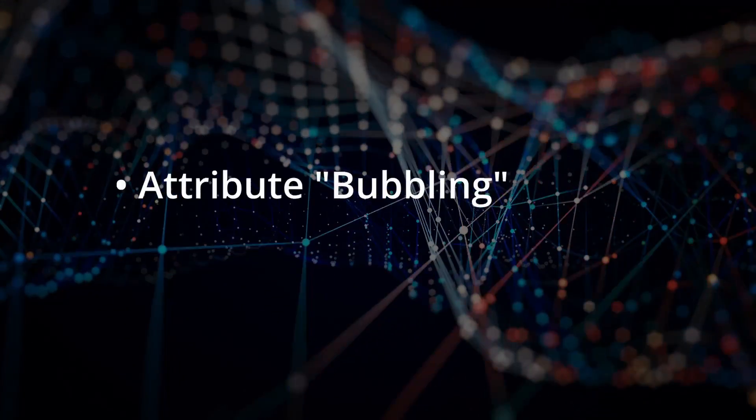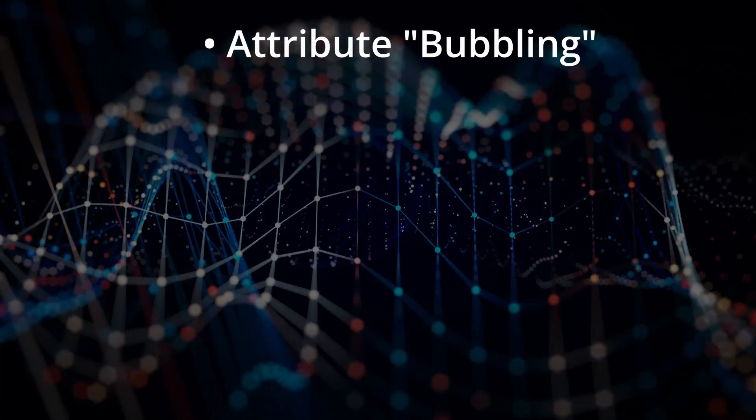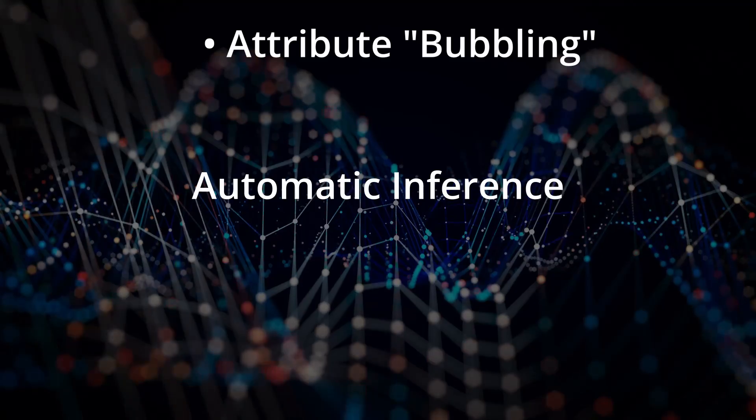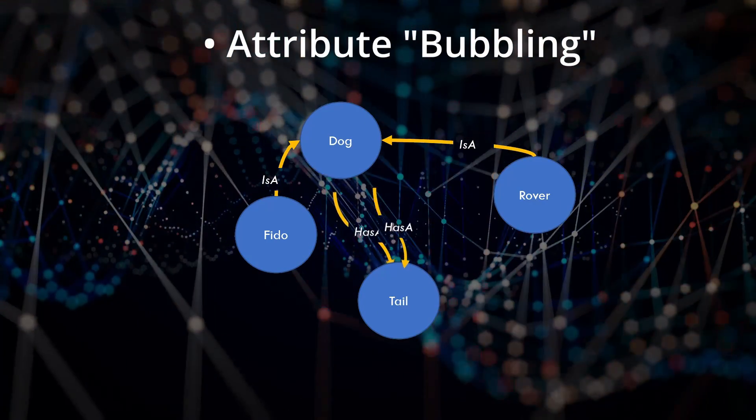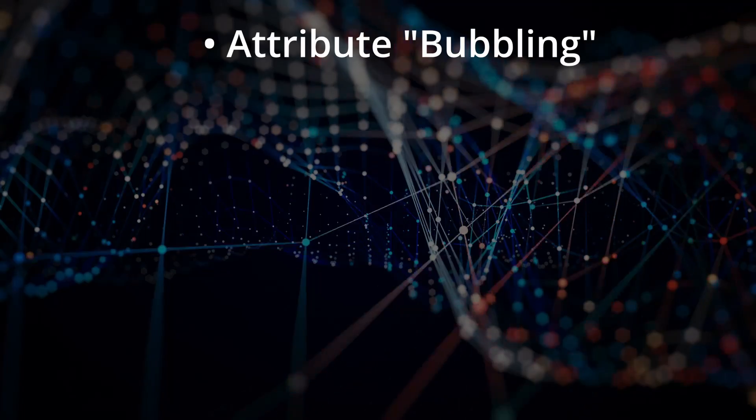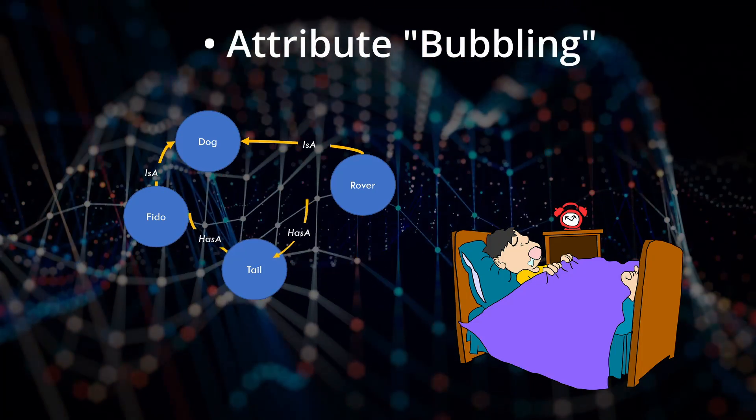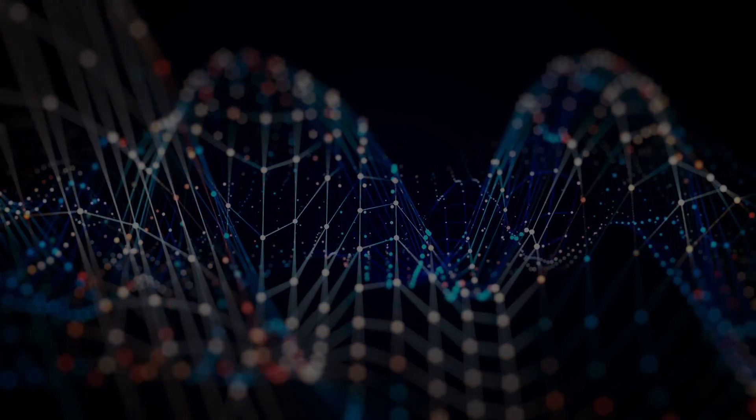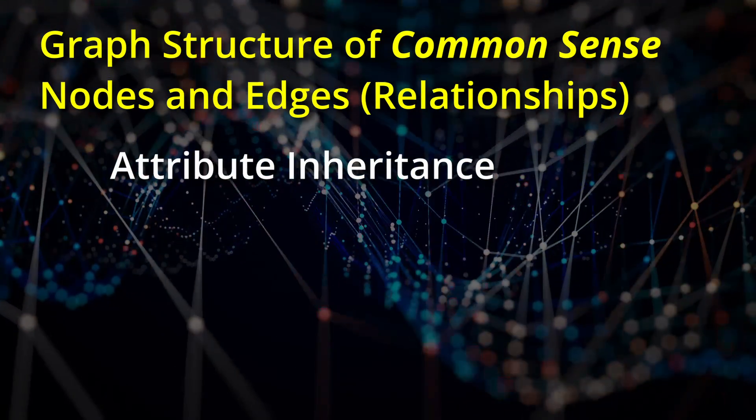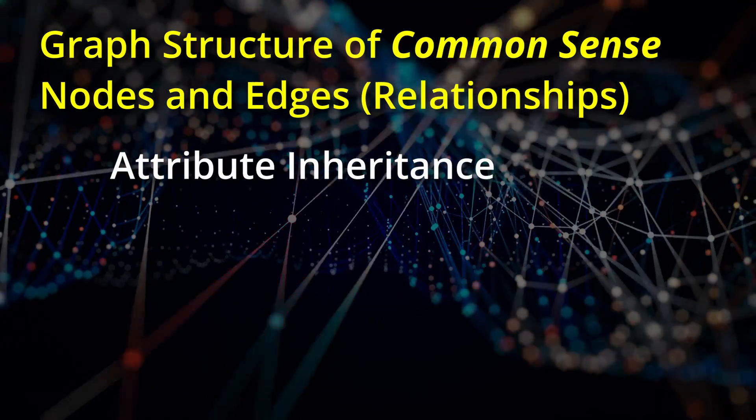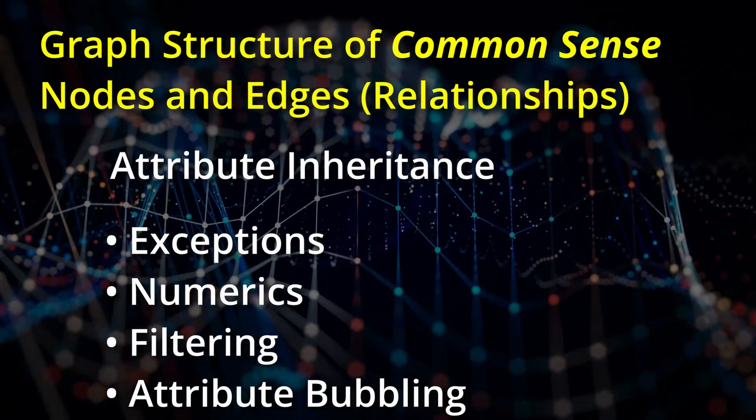This is the last concept I want to bring up, but could be even more important than inheritance with exceptions. I call it attribute bubbling. If you know that Fido has a tail and Rover has a tail, can you automatically infer that a dog has a tail, and then remove the relationships from tail to Fido and Rover? Perhaps this is what is going on when you are dreaming - your mind is more or less randomly triggering things you already know, looking for attributes to bubble. In this video I've reviewed the fundamental graph structure of common sense and added the concept of attribute inheritance. You can see that this is a giant step on the way to common sense, especially when you consider adding exceptions, numerics, filtering, and attribute bubbling, which I'll explore in future videos.